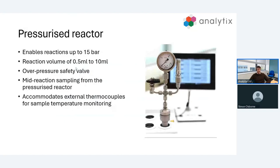This is our pressurized reactor. This enables reactions up to 15 bar. It's handy for reactions that need a little bit of help and pressure to occur. We have a reaction volume of 0.5 mils up to 10 mils, and we have an over pressure safety valve on the right. This will safely release excess pressure. We have a small inlet there for mid reaction sampling, so even when it's pressurized we can sample from this and analyze your reactant mixture. Using a three-way valve, we can also accommodate external thermocouples to measure your actual temperature of the sample mid run.